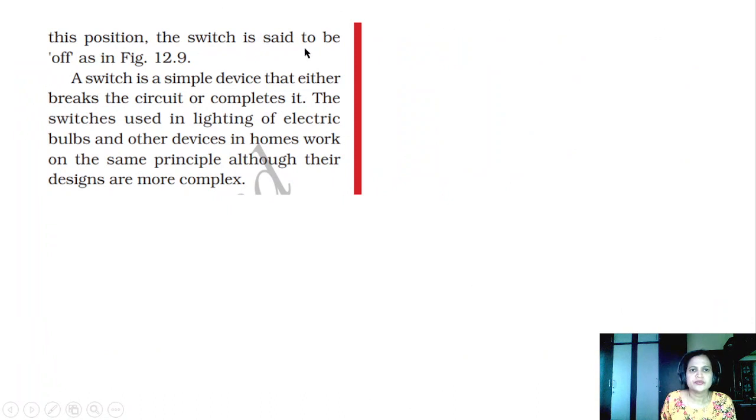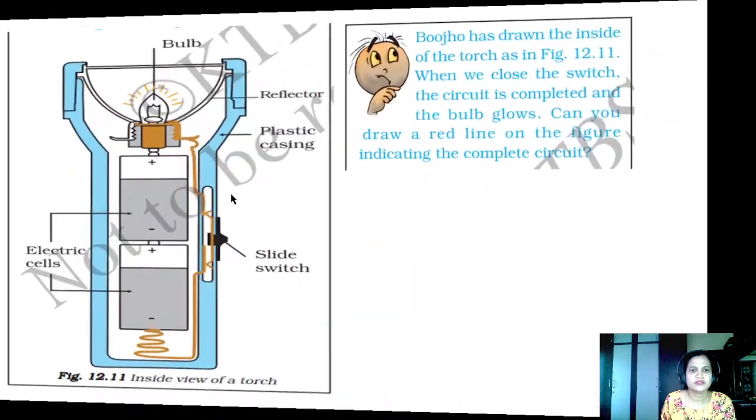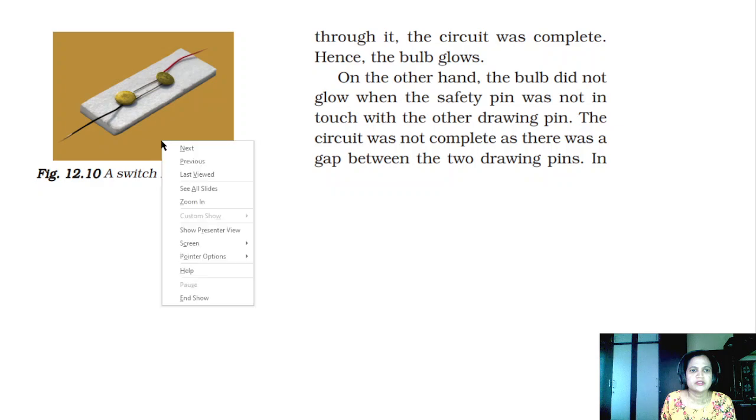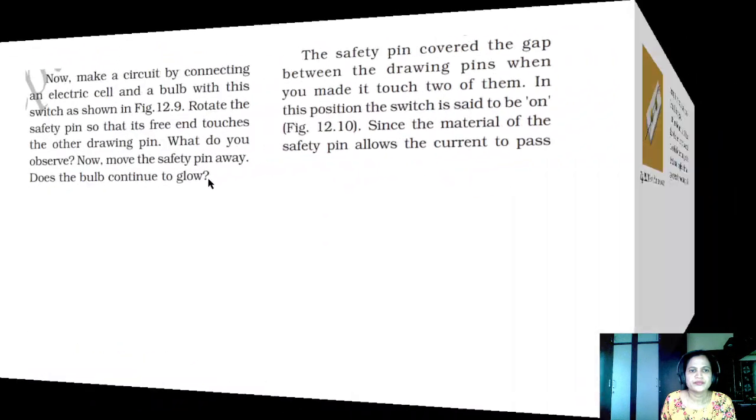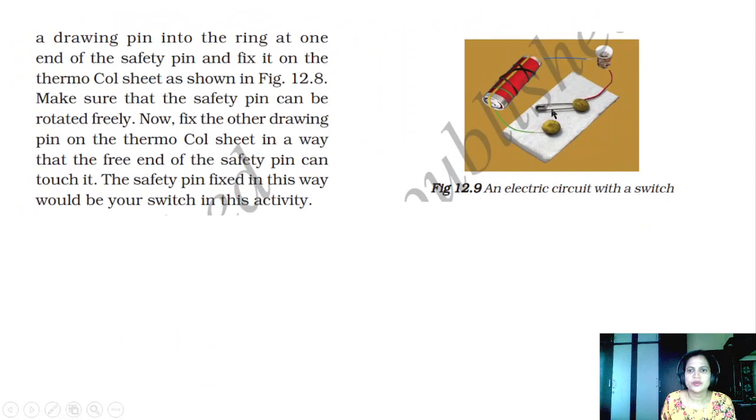These are the parts of the torch you use everyday at home. So in this position, the switch is said to be off as in figure 12.9. When it is off, let us see. It is closed now. And in this figure, it is off now. When this pin touches this, the circuit closes. It is switched on.